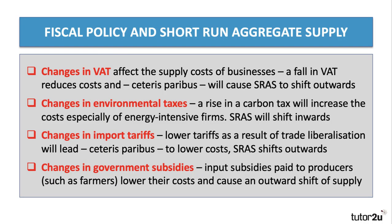I'm going to focus on two things. One is how fiscal policy decisions can impact short-run aggregate supply, or SRAS. And then we'll also spend a few minutes thinking about the long-run impact of fiscal policy. Here are four examples of how changes in fiscal policy can impact the short-run costs of producers across the economy, therefore shifting short-run aggregate supply.